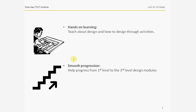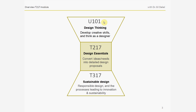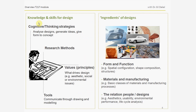This module was designed as a smooth progression from the first level to the third level. U101 is a level 1 design thinking module with a focus on thinking as a designer. T217 is a level 2 module, Design Essentials, where we will focus on producing detailed design proposals. We will look at knowledge and skills for design as well as the ingredients that make design.